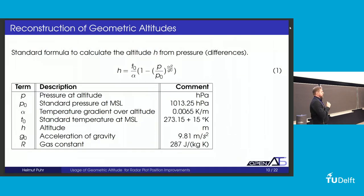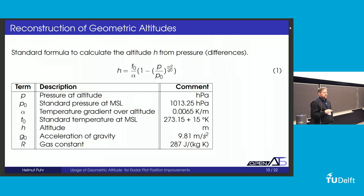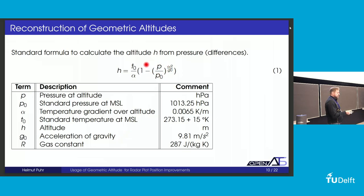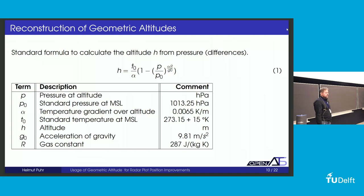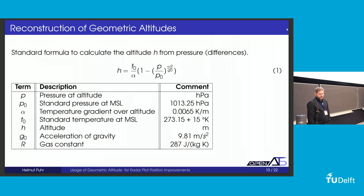To reconstruct geometric altitude, we first have to discuss how altitude is calculated based on pressure. This is the standard formula based on the respective ICAO documentation and an ISA standard atmosphere. The only two terms for the standard calculation are the pressure P — all others are constants. From this you get an H, which is a height. For example, an aircraft in cruise measures the pressure at altitude P, and using this formula with standard parameters, it calculates its altitude and downlinks this as Mode C.